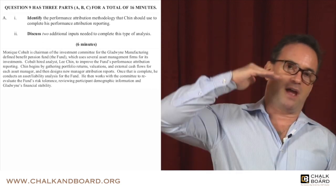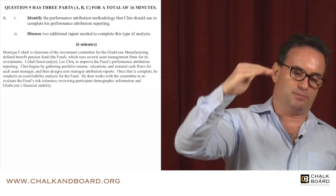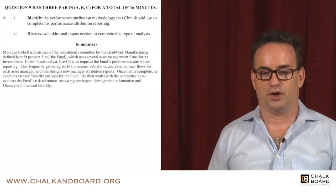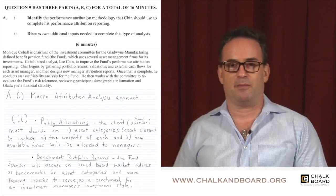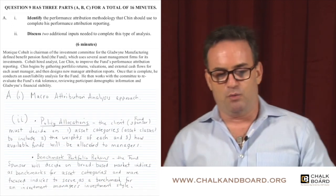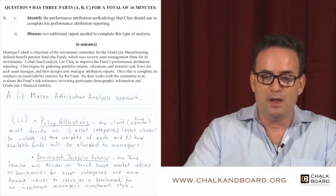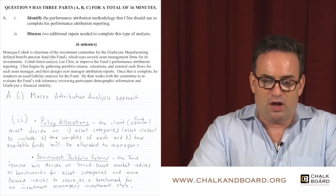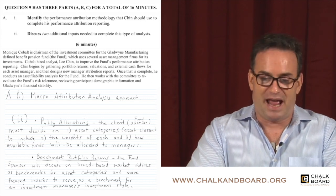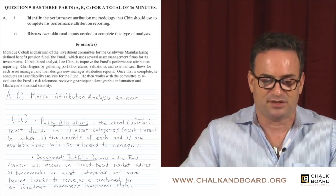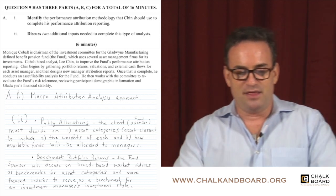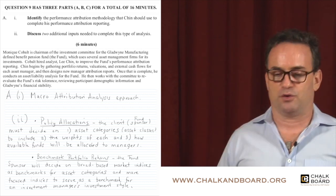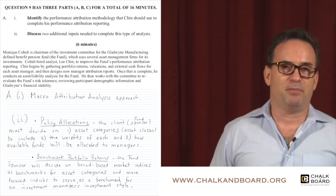What I would have done is put down 'policy allocations' for the first bullet point, and 'benchmark portfolio returns' for the second. For policy allocations, you'd explain that the fund sponsor decides on the asset categories — meaning the asset classes to include, the weights of each asset class, and the available funds that can be allocated to each of the managers for those asset classes.